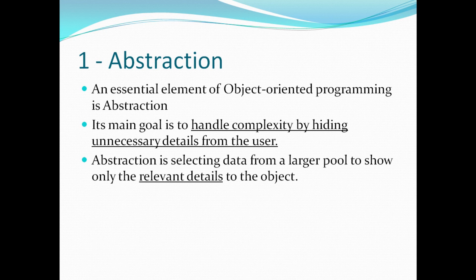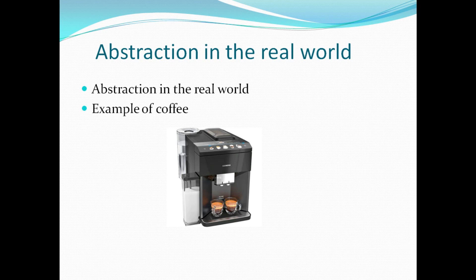Let's understand abstraction with a real world example using a coffee machine. For example, I am a coffee addict. I wake up in the morning, go to my kitchen, switch on the coffee machine and make coffee. Making coffee with a machine is a good example of abstraction. We need to know how to use the coffee machine to make coffee — you provide water and coffee beans, switch it on, and select the kind of coffee you want.